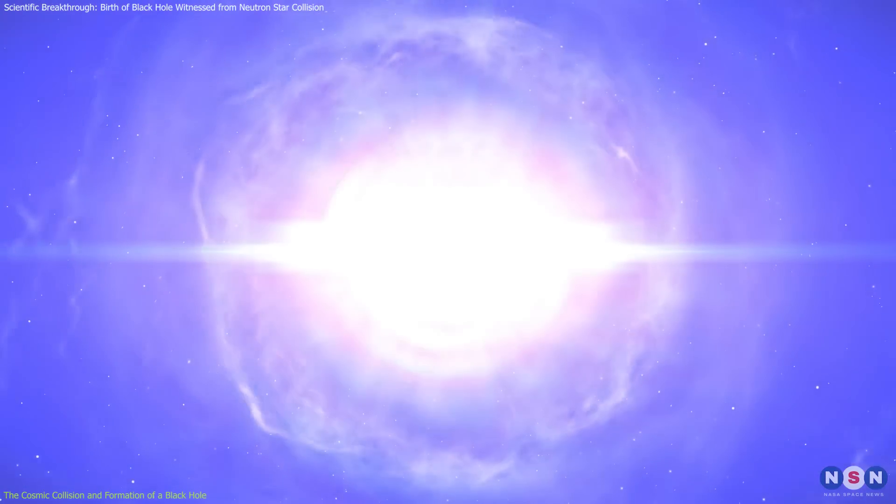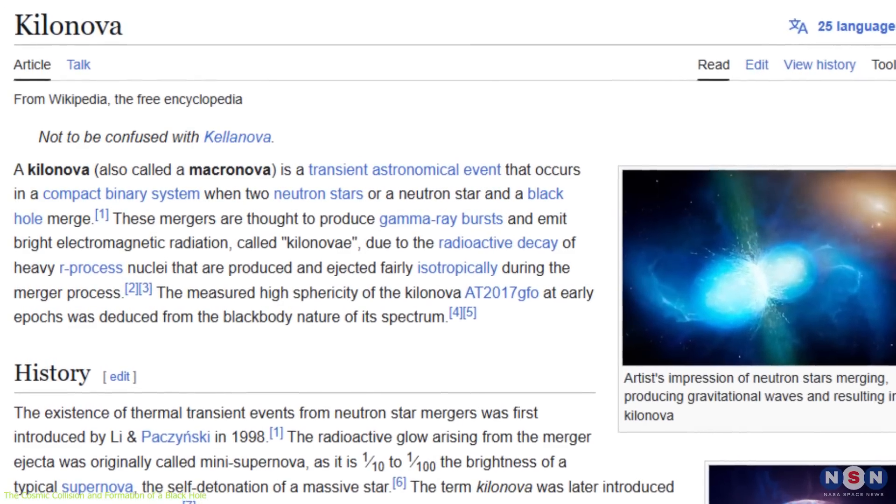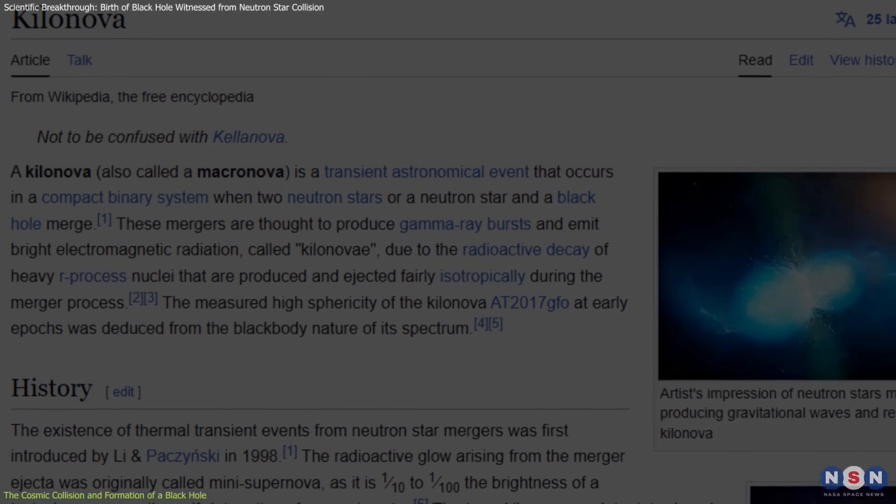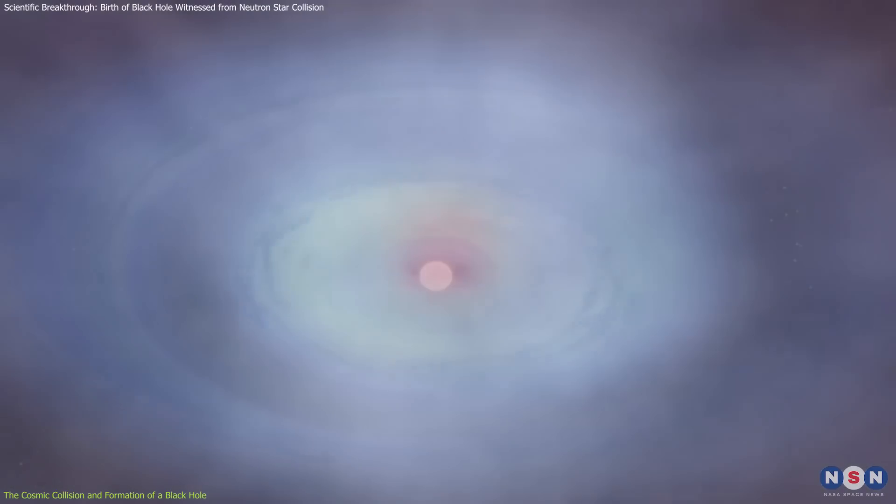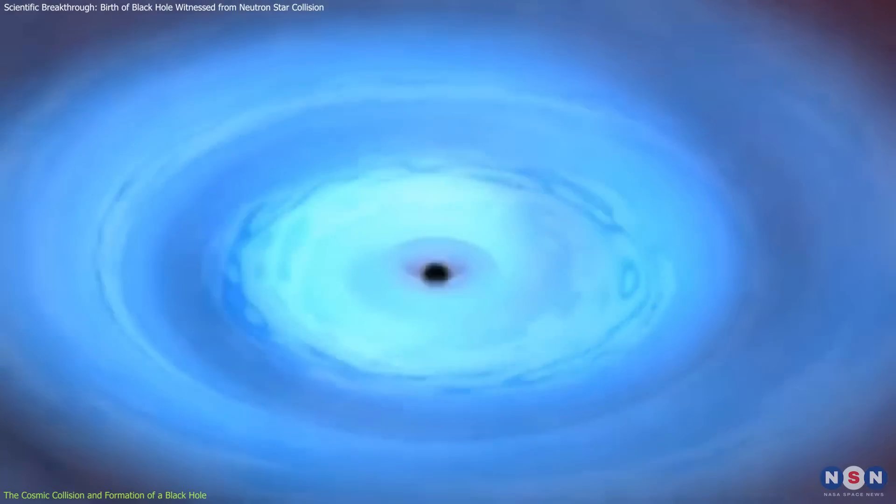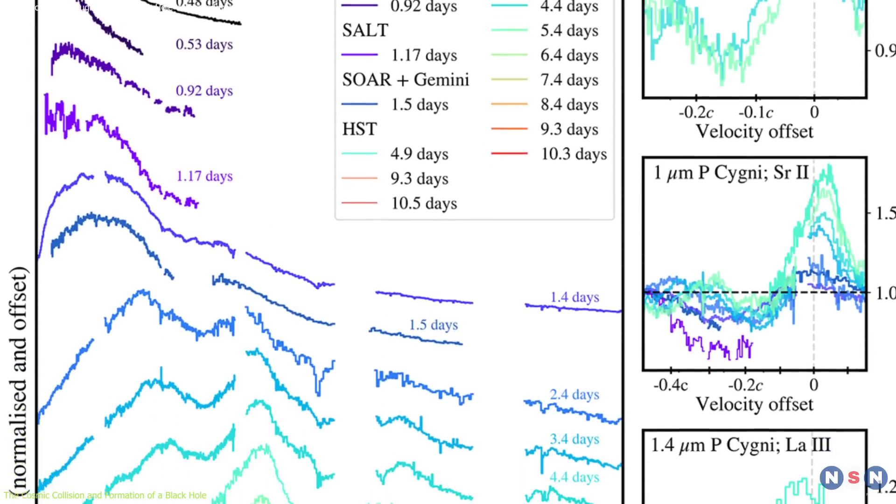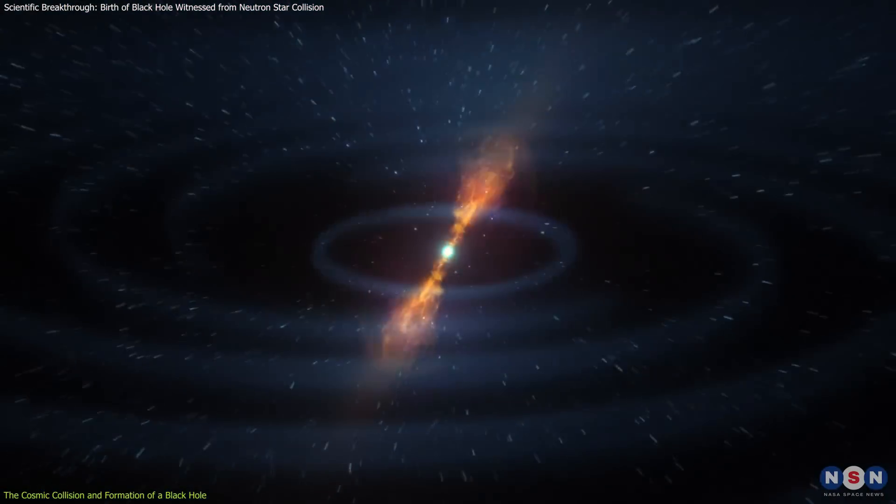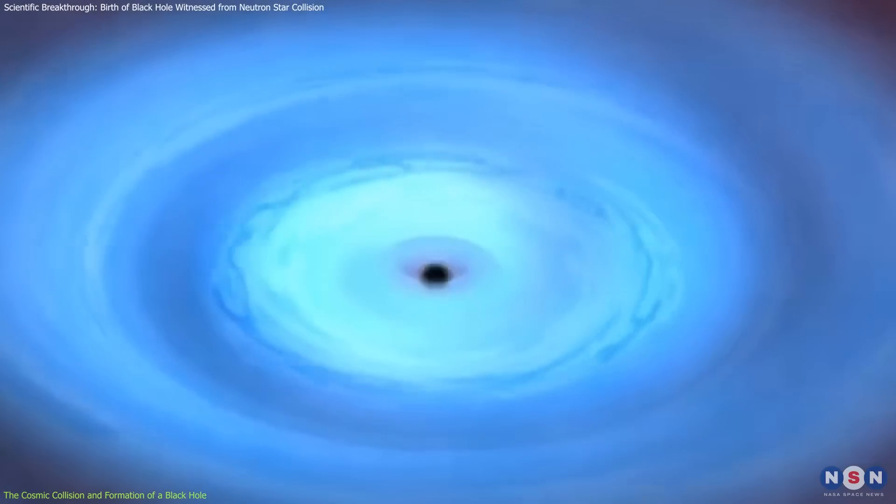As they collide, these neutron stars produce a burst of energy that lights up space. This event, called a kilonova, releases light as bright as hundreds of millions of suns. Along with this, the collision gives birth to a new black hole. It's one of the most violent and powerful events we've observed. A neutron star crash that collapses under its own gravity to form a black hole.